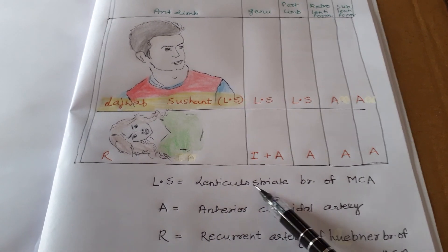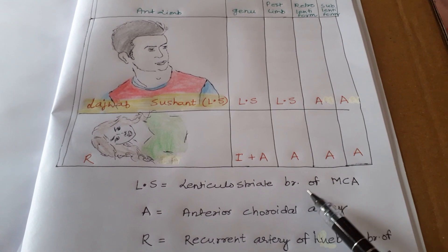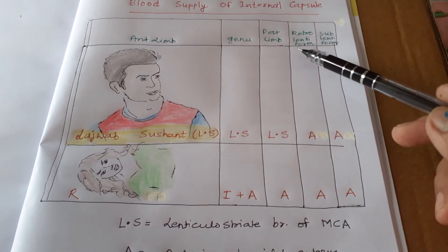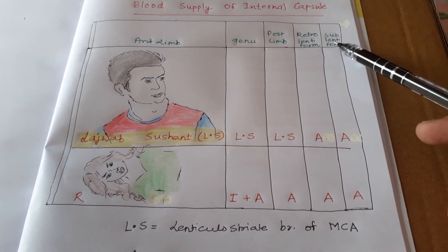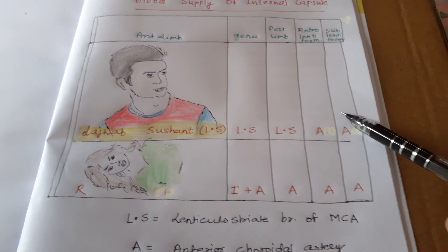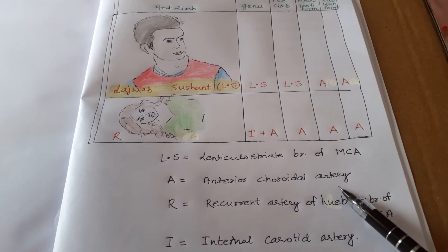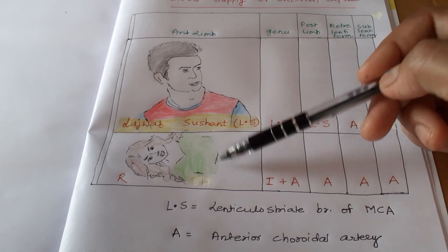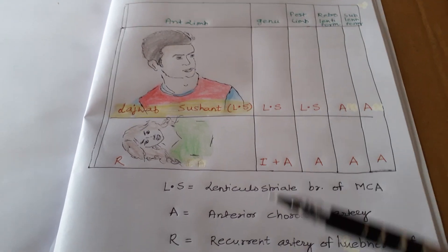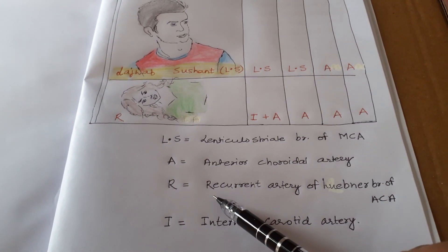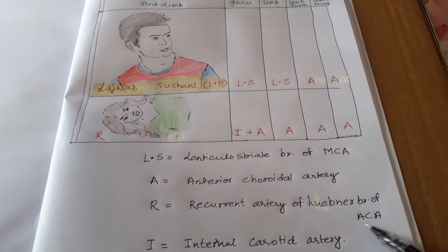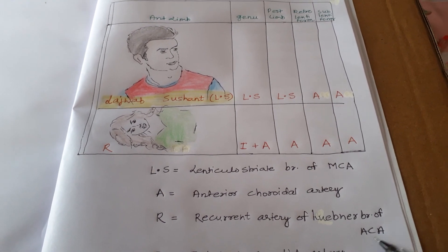Lenticulostriate branch of the middle cerebral artery supplies the superior part. For the retrolentiform and sublentiform parts: the upper part is supplied by the anterior choroidal artery, and the lower part anteriorly is supplied by the recurrent artery, which is a branch of the anterior cerebral artery.